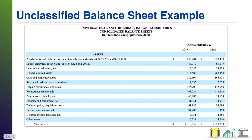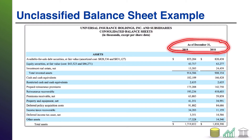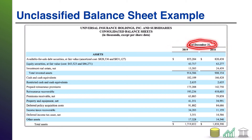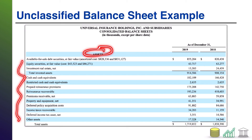Let's take a look at an example of an unclassified balance sheet. This is Universal Insurance Holdings and Subsidiaries. They have their company name up top, they also have the name of the financial statement up top, and then they have the point in time listed above the numbers. Specifically, their point in time is December 31st, and they have two different years present: 2019 and 2018. First up, they have an asset section where they list all the assets of the company and they subtotal those assets.